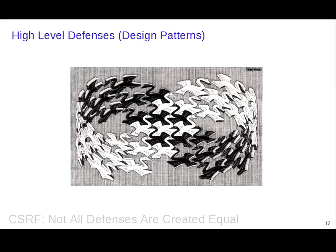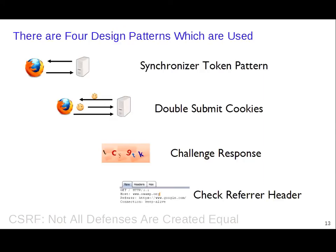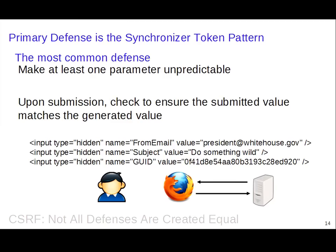So that's CSRF attacks — now the defenses. There are four basic patterns people use to defend against CSRF attacks: the synchronizer token pattern, double submit cookies, a challenge-response system, and checking the referrer header. We'll talk about each briefly and then look at specific implementations of all of them.